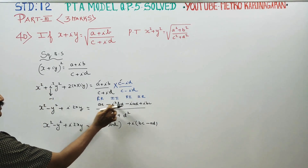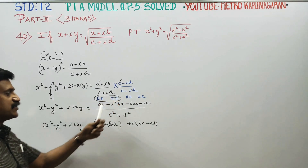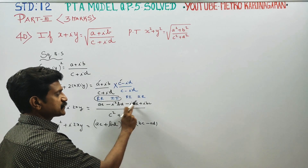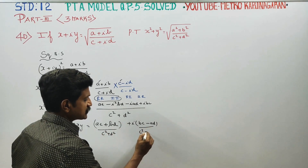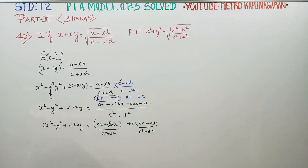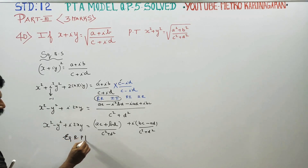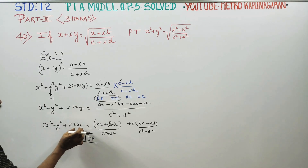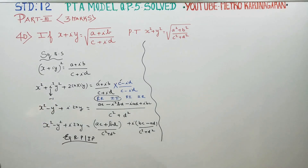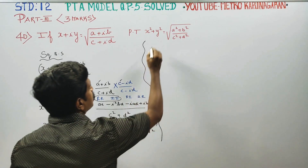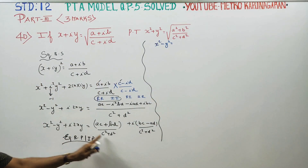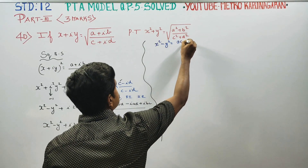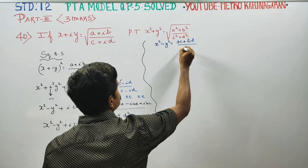Real part is equal to: real into real and imaginary into imaginary gives the real part. The common denominator for both terms is c square plus d square. Here we write c square plus d square. Equating real part and imaginary part: the real part is x square minus y square equals ac plus bd by c square plus d square.